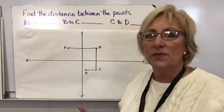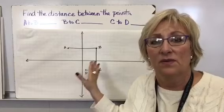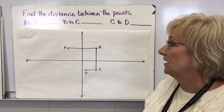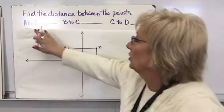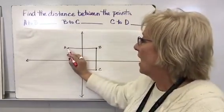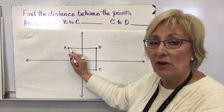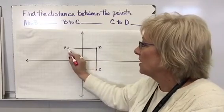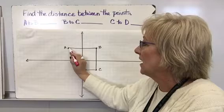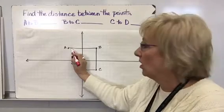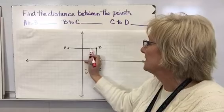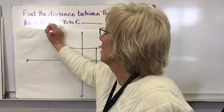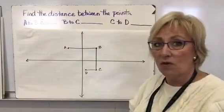Now let's find the distance. There are two ways we can find it. One is counting, which is easy when you have a coordinate plane. Think of it like being on a map finding the distance from school to your home. Starting at A, I count each unit to B — one, two, three, four, five, six, seven, eight. From A to B it's eight units. We call them units because those are what the squares on the coordinate plane are called.